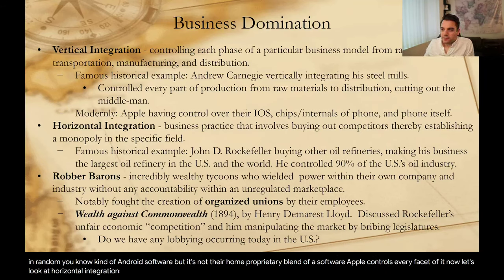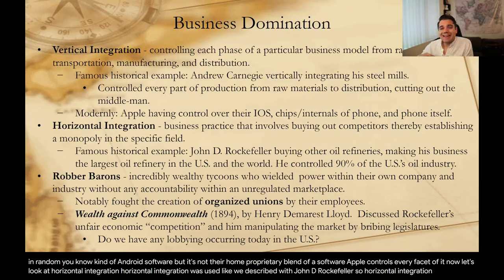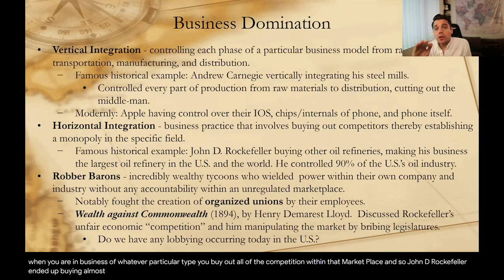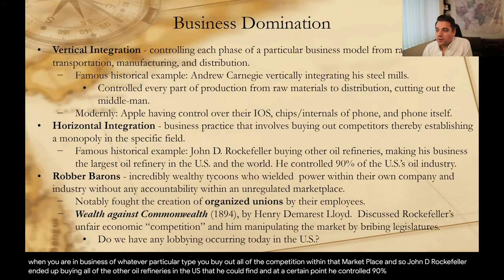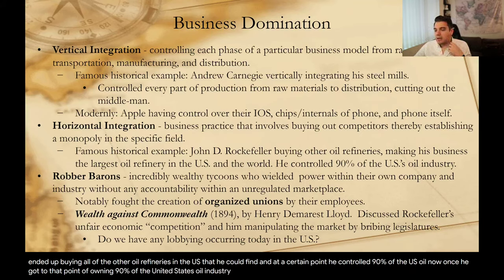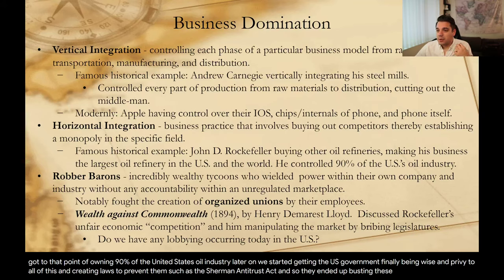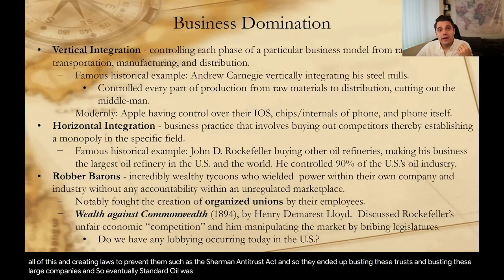Now let's look at horizontal integration. Horizontal integration says that when you are in business of a particular type, you buy out all of the competition within that marketplace. John D. Rockefeller ended up buying all of the other oil refineries in the U.S. that he could find. At a certain point, he controlled 90% of U.S. oil. Once he got to that point, we started getting the U.S. government finally being wise to all of this and creating laws to prevent them — such as the Sherman Antitrust Act — which busted these trusts and large companies. Standard Oil was disintegrated into smaller oil companies because he owned too much power and influence.